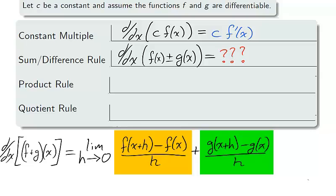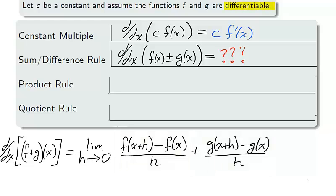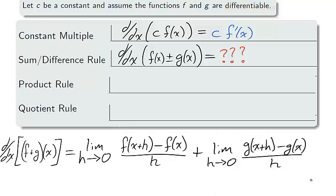However, note that the individual limits are the limit definitions for the derivative of f and g. Since we began by assuming that our functions are differentiable, that means the limits exist. So we can split the limit and obtain our new sum rule.